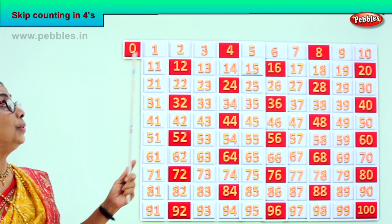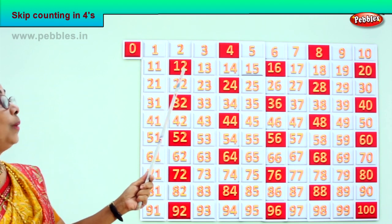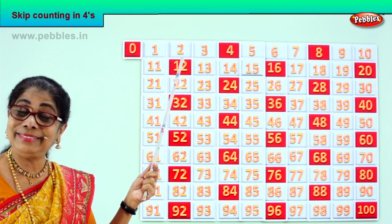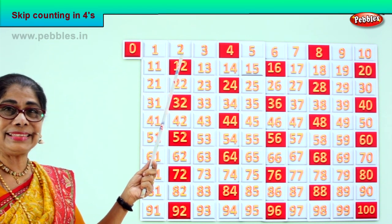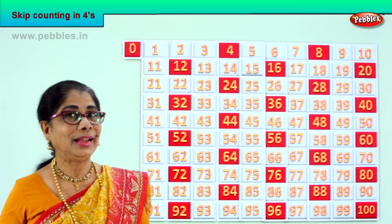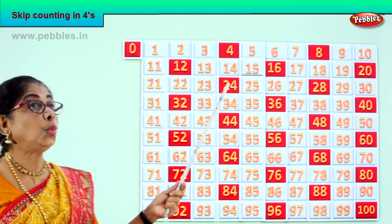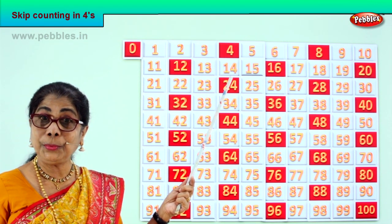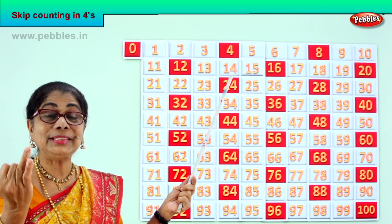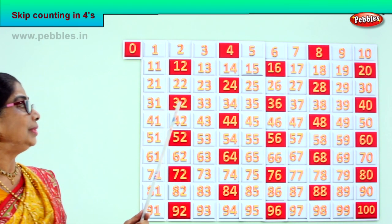So we have done 0, 4, 8. After 8: 9, 10, 11, 12. After 12: 13, 14, 15, 16. After 16: 17, 18, 19, 20. After 20: 21, 22, 23, 24. After 24: 25, 26, 27, 28. After 28: 29, 30, 31, 32.